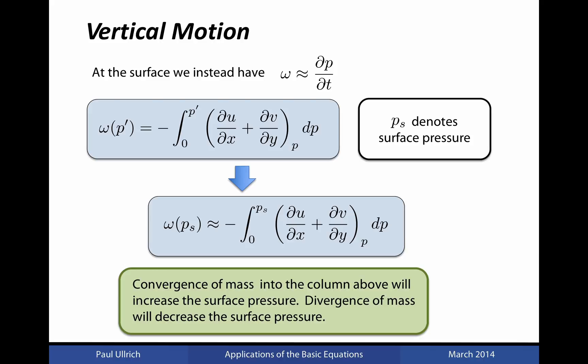Divergence of mass, on the other hand, must correspond to a loss of mass within the fluid column, and hence will lead to a decrease in surface pressure as the mass above you in the atmospheric column decreases.